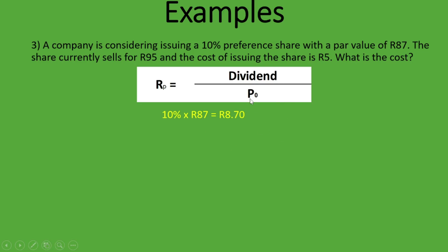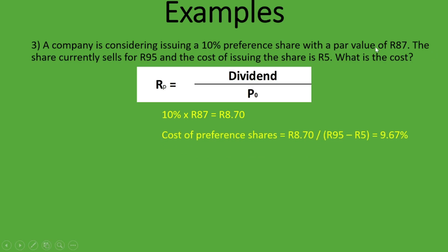The new element here is the cost of issuing the share — R5 — also known as the flotation cost. For the denominator, you take the current market price and deduct the issuing cost. Without flotation cost, the denominator is simply the current market price. With flotation cost, it becomes: market price minus issuing cost. So: R95 − R5 = R90. Therefore: R8.70 ÷ R90 = 9.67 percent cost of preference shares.